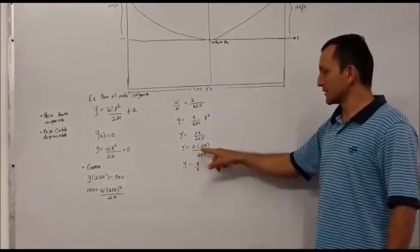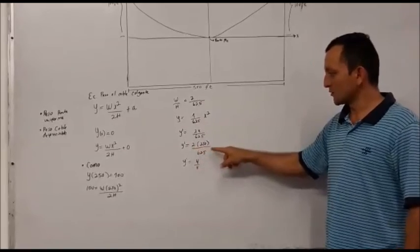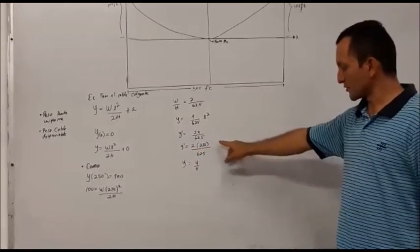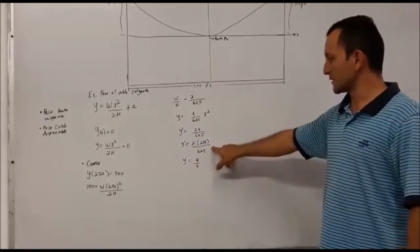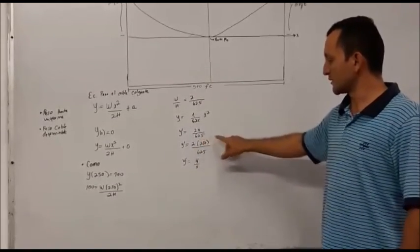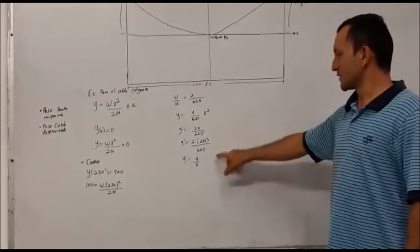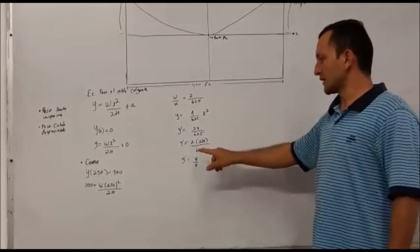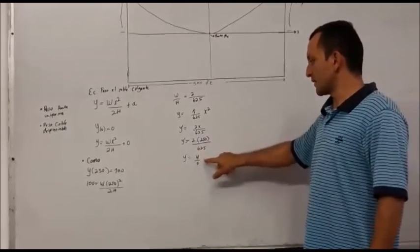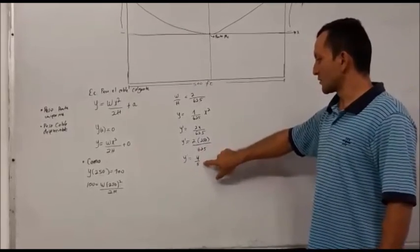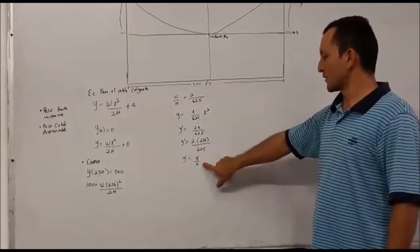Reemplazando, tenemos que y' es igual a 2 por 250 sobre 625. Haciendo esta multiplicación y fracción, vamos a obtener que y' es igual a 4 quintos, es decir, 4/5.